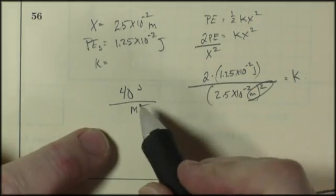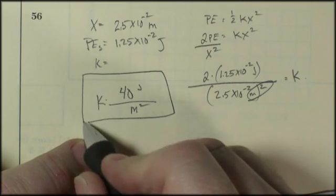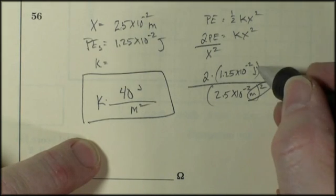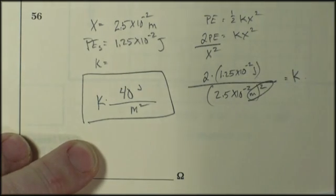Now you think, well, that's not spring constant. But in fact, technically it is. Dimensional analysis says it's got to be joules per meter squared.